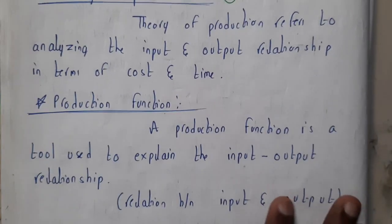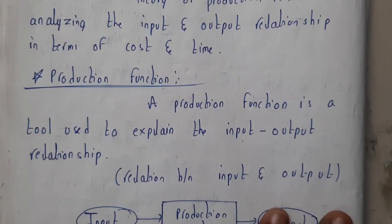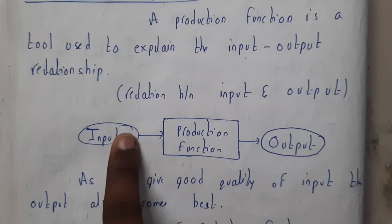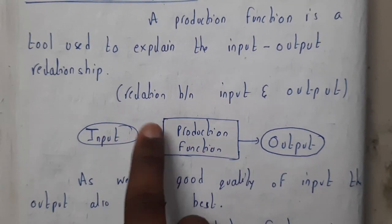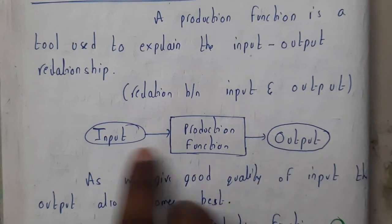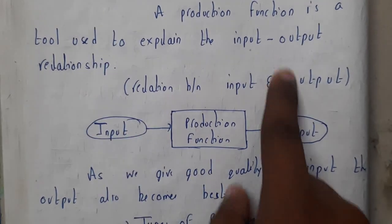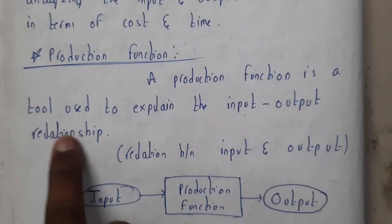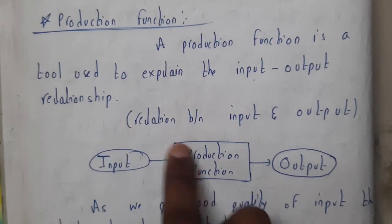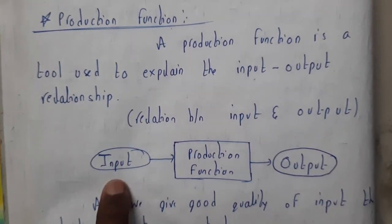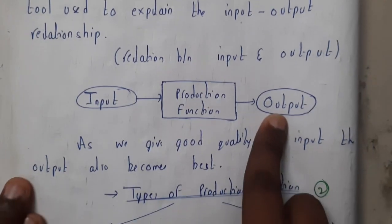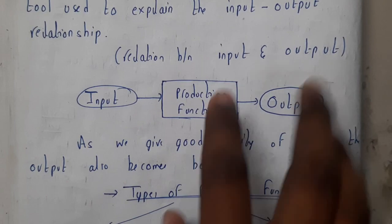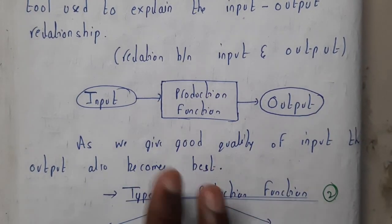Now let us go through production function. A production function depends completely on input — if you give input to the production function, you're going to get the output. If you increase the quality of input, the quality of output also increases. So a production function is a tool used to explain the input-output relationship. As we give good quality input, the output quality will be the best.